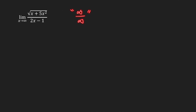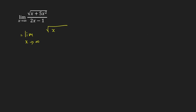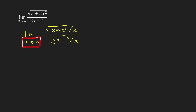The trick in evaluating this limit is to divide the numerator and denominator by the highest power of x in the denominator. In this case we only have x raised to 1, so we divide by x. We get the limit of the square root of x plus 5x² over x, all over 2x minus 1 over x. Now we want to combine this into a single radical. As x goes to infinity, x is positive, so we can replace x by the square root of x², since x equals √(x²) for x greater than 0.